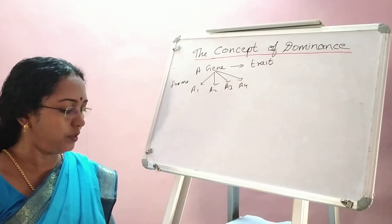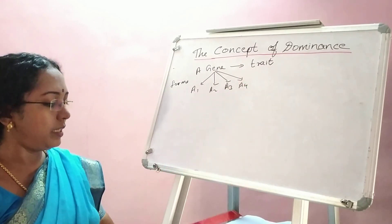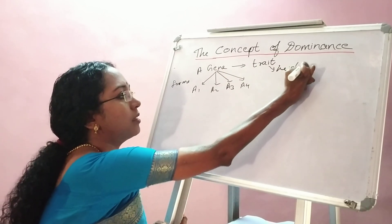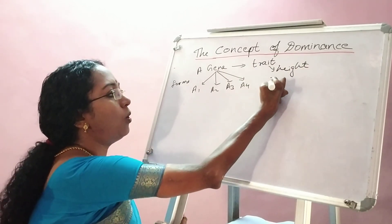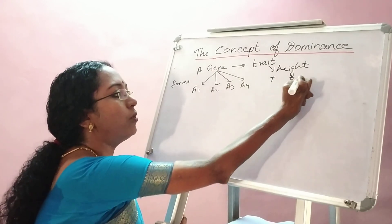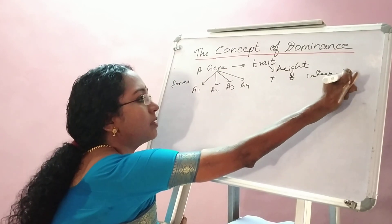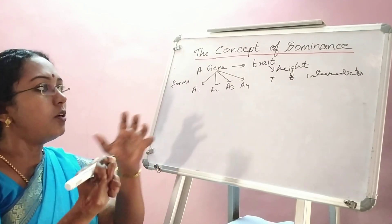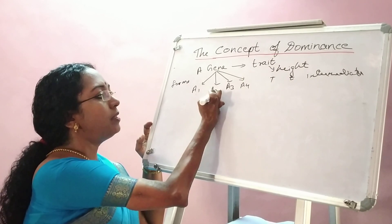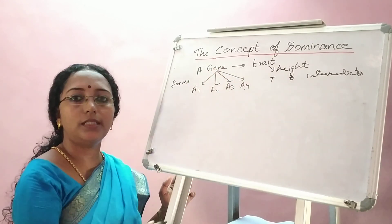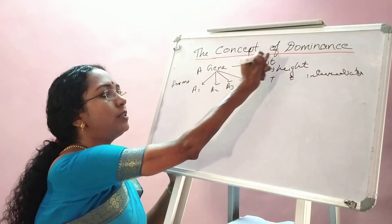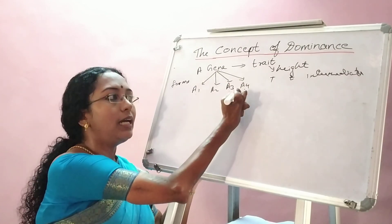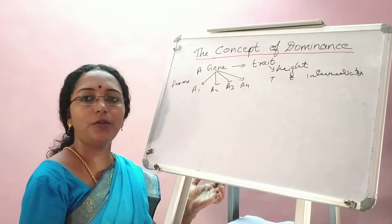For example, take the trait of height. A person can be tall, a person can be dwarf, or a person can have intermediate heights — different gradations of height. This is all because that person has different alleles for the height gene. Every person has the gene for height, but the form of that gene differs, and accordingly their height also differs.